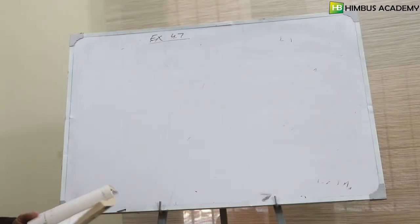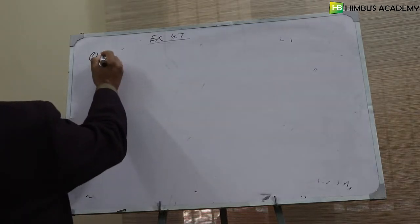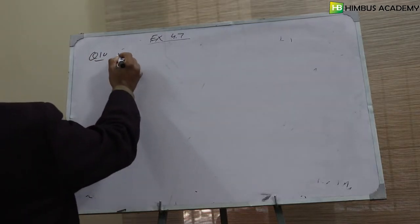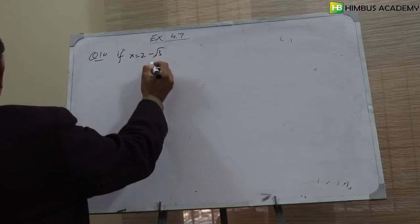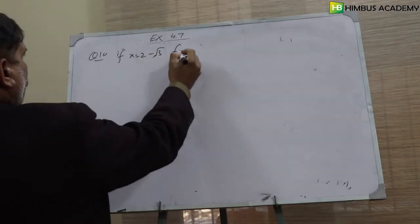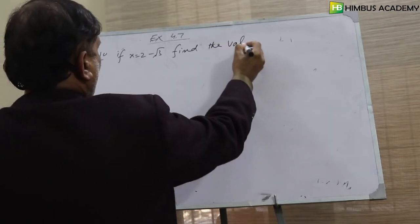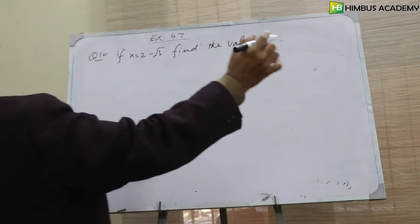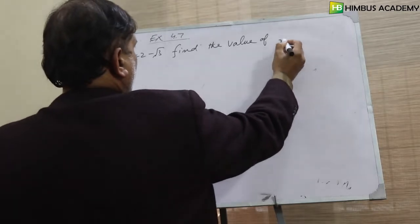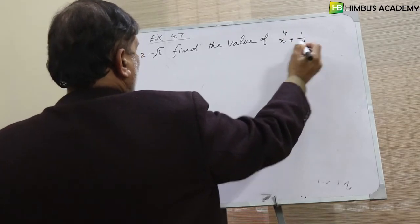Question number 10: If x is equal to 2 minus square root 3, find the value of x power 4 plus 1 over x power 4.